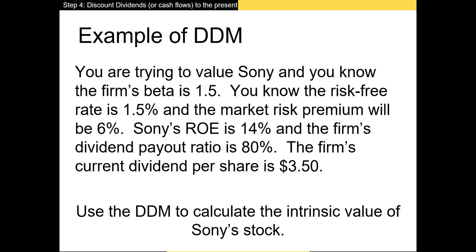In this first example, we're estimating the value of Sony. The firm's beta is 1.5, the risk-free rate is 1.5%, and the market risk premium is 6%. Sony's ROE is 14% and the dividend payout ratio is 80%, with a current dividend per share of $3.50. We'll use the DDM to calculate intrinsic value — since we have beta and risk premium, we'll use the CAPM for the discount rate and the ROE/retention ratio method for the growth rate.